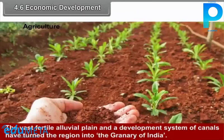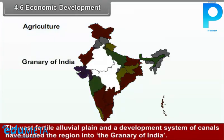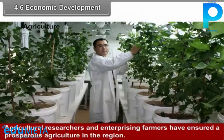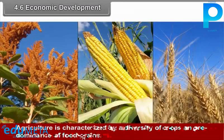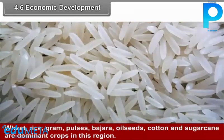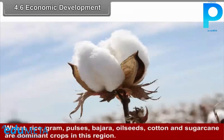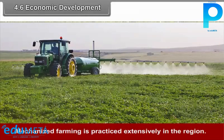4.6 Economic Development - Agriculture. The vast fertile alluvial plain and a developed system of canals have turned the region into the granary of India. The region produces a marketable surplus of food grains. Agricultural researchers and enterprising farmers have ensured prosperous agriculture in the region. Agriculture is characterized by a diversity of crops and predominance of food grains. Wheat, rice, gram, pulses, bajra, oil seeds, cotton, and sugarcane are dominant crops in this region.